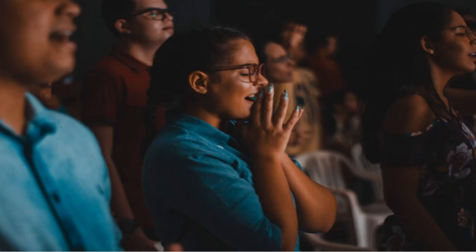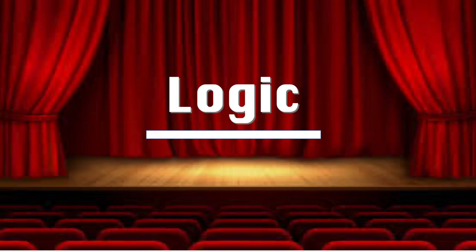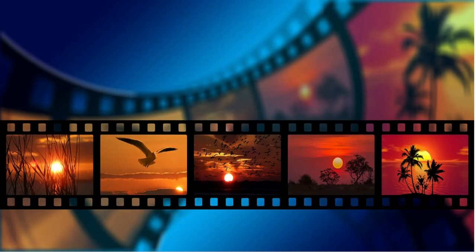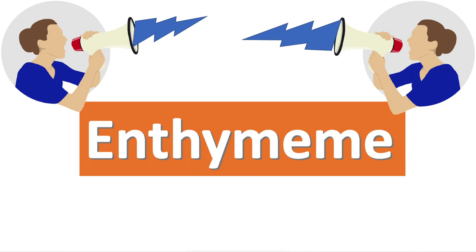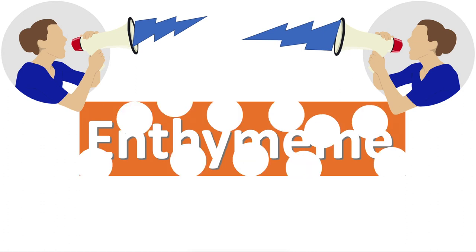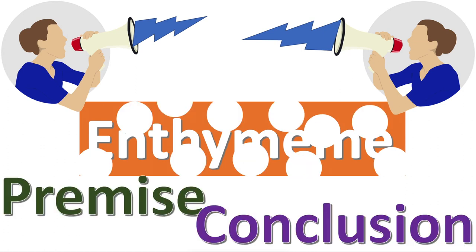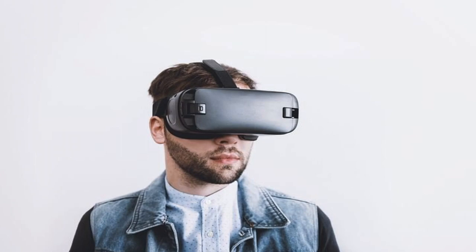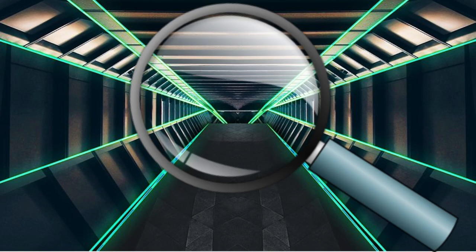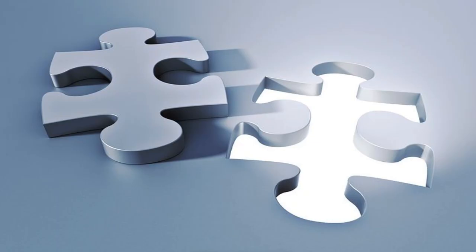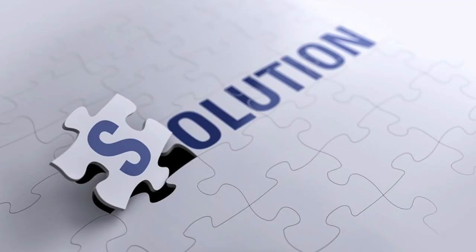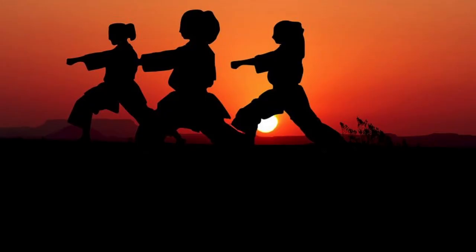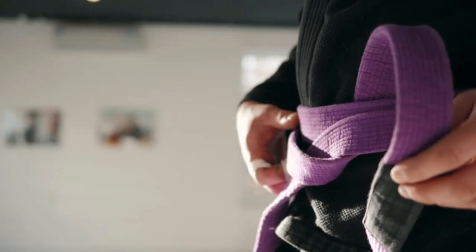Ladies and gentlemen, welcome back to logic. This video is all about enthymemes. An enthymeme is a kind of argument that is missing something — a premise or conclusion. In this video, you will learn how to identify the missing piece of the argument, translate it, and check it for validity. You are very close to receiving your purple belt in logic.